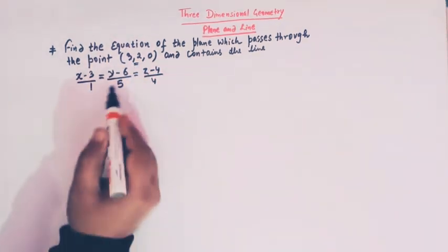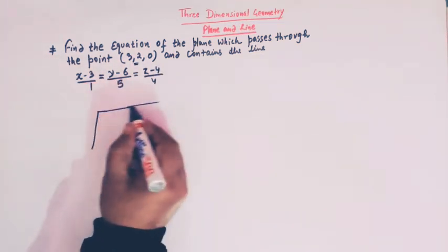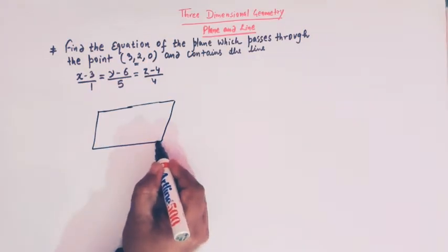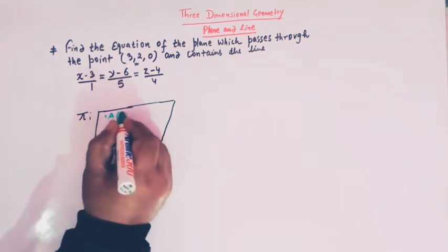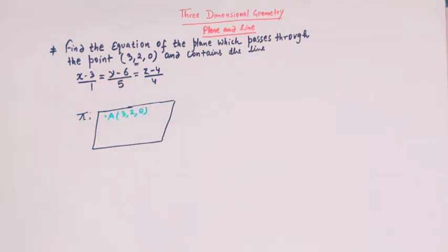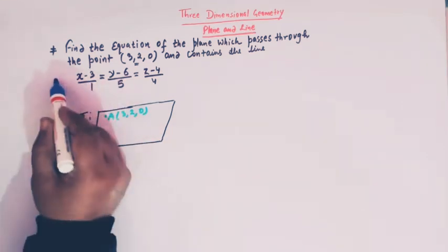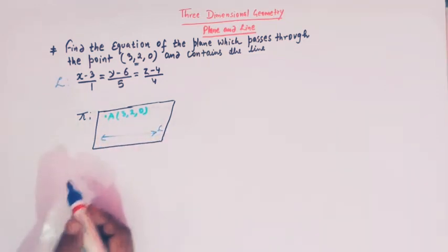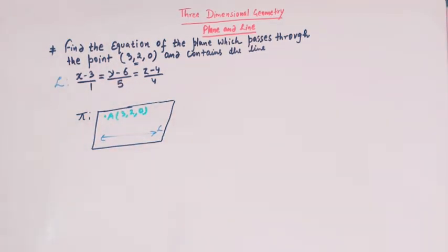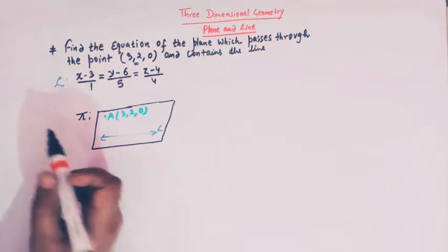We have to find the equation of the plane which passes through this point and contains this line. Let's denote the plane by the letter pi. The point through which this plane passes is taken as A, which is (3, 2, 0). Moreover, this plane contains line l.